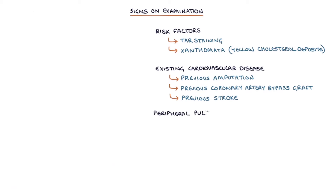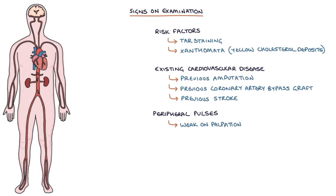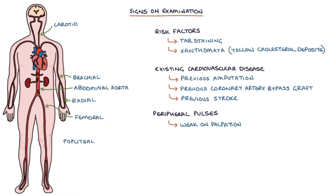The peripheral pulses may be weak on palpation. Palpable pulses throughout the body include the radial, brachial, carotid, abdominal aorta, femoral, popliteal — behind the knee — posterior tibial, and dorsalis pedis pulses.